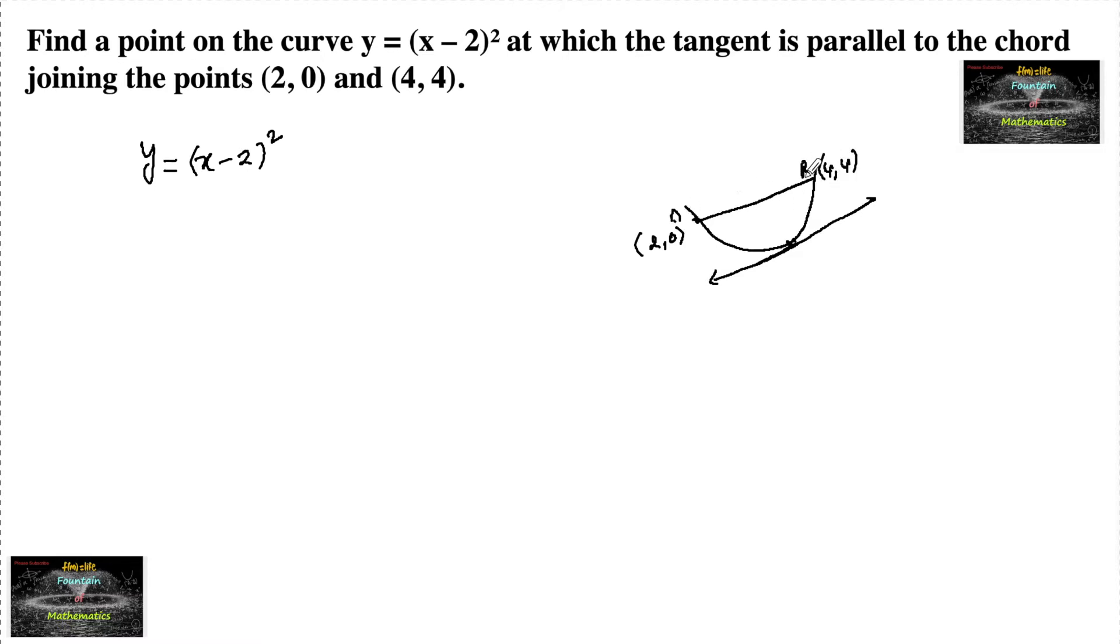Say this is chord AB and our tangent is drawn which is parallel to the chord, which indicates that the slope of chord is equal to slope of tangent.